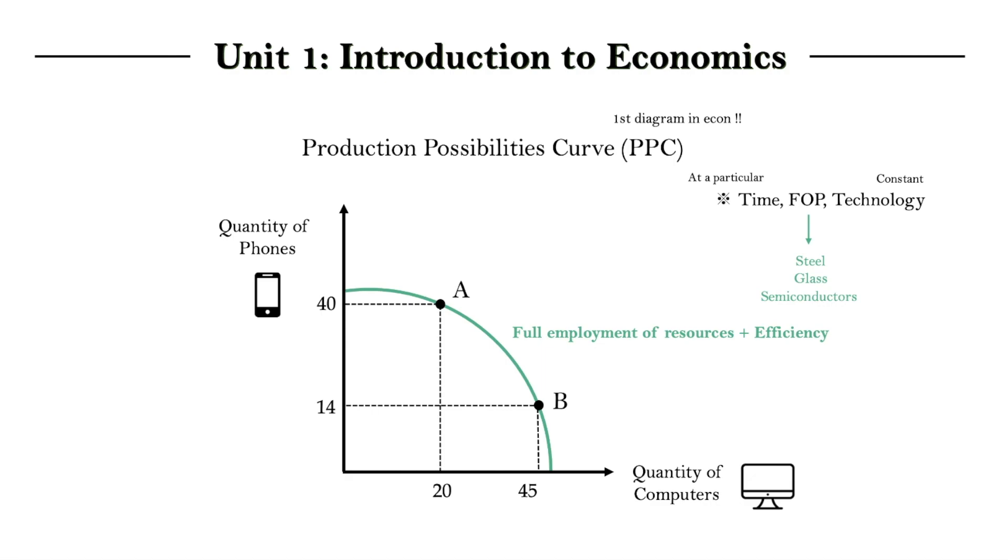So, we're noting that in either case of point A or B, we're simply making a different choice in which good we will allocate more resources to. We're still using all resources efficiently in both cases. So, any movement along this curve, A or B, represents a choice on what we're going to make and how much of it we're going to produce.